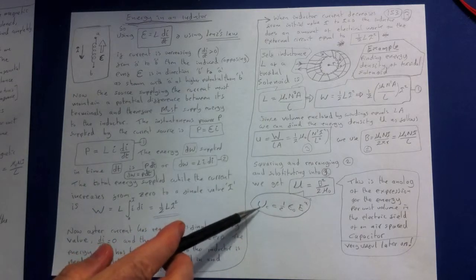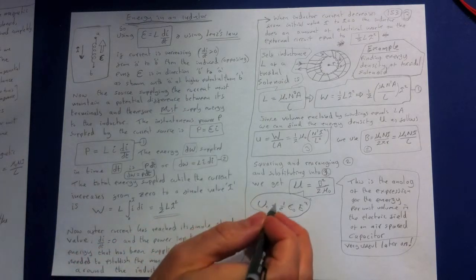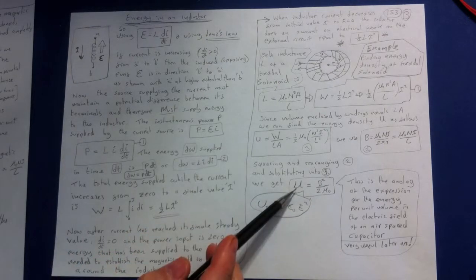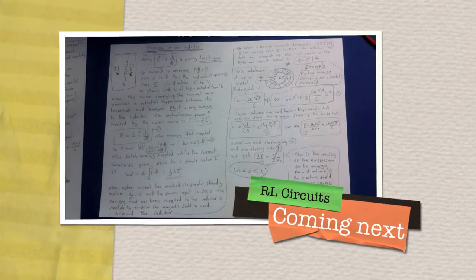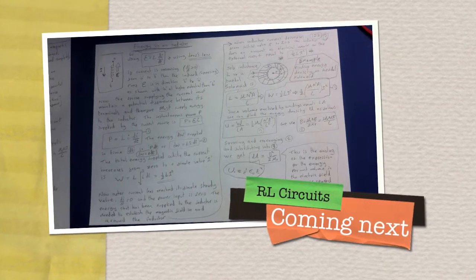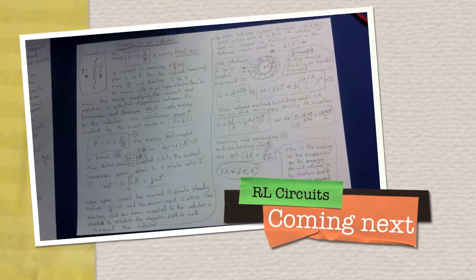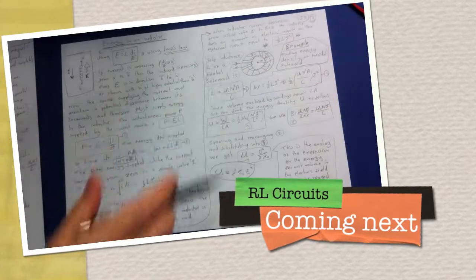So we've got the energy per unit volume for a capacitor. We've calculated that before. And now we have the energy per unit volume for an inductor. That's going to be very useful later on when we are discussing EM waves. So just wanted to go through that, this quick example.